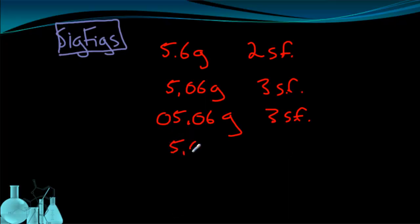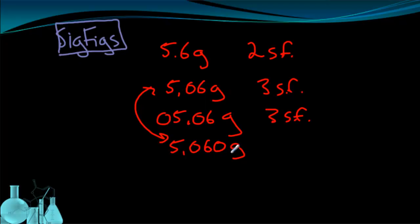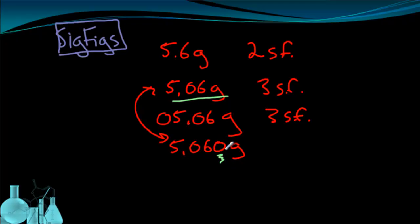Now let's look at a fourth measurement: 5.060 grams. In math, you may think this is equivalent to 5.06. Mathematically, sure, they probably are. However, when we're talking about measurements, this extra 0 at the end actually means something. It tells us that we are certain that this digit is a 0. Whereas in the earlier measurement, that spot could be 5.061 or 5.068 — we don't really know what that next digit is. So this 0 is significant because it confirms that value. All four digits are significant, giving us four significant figures.